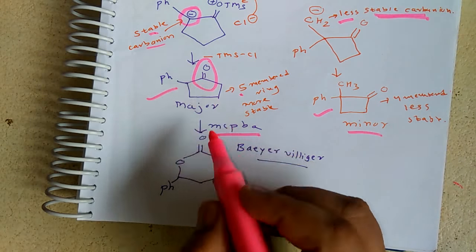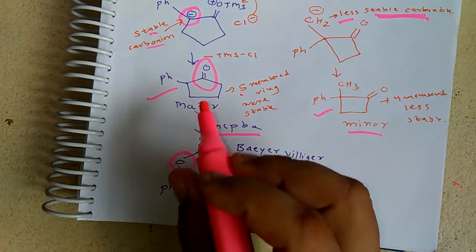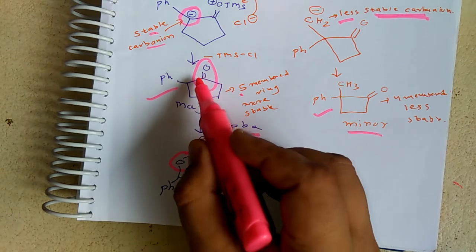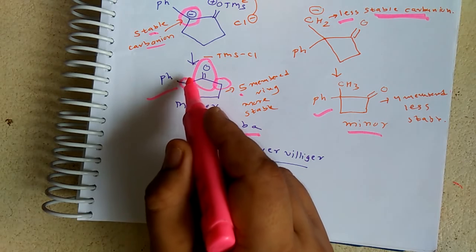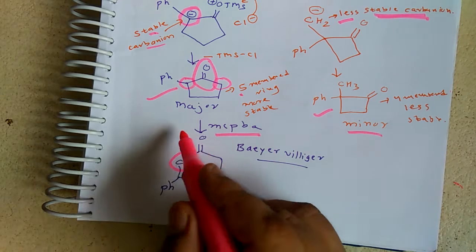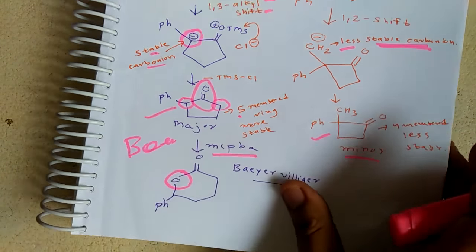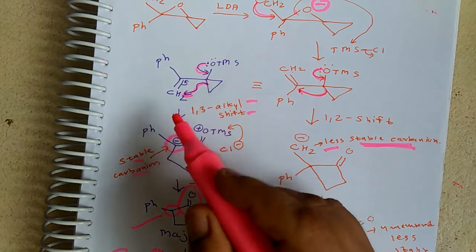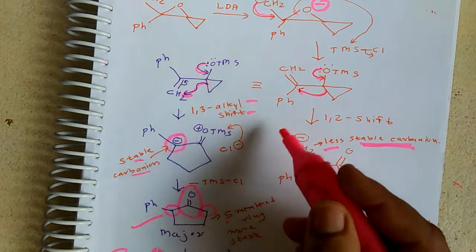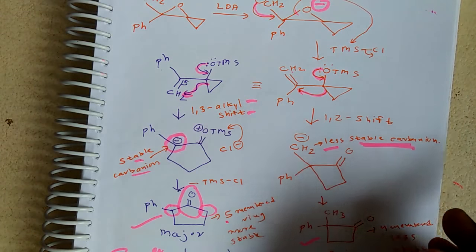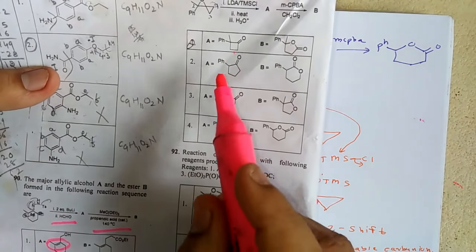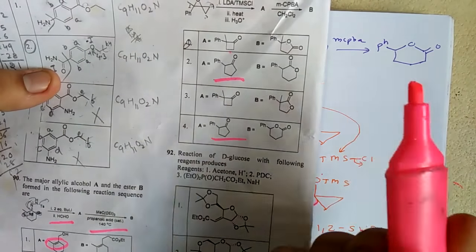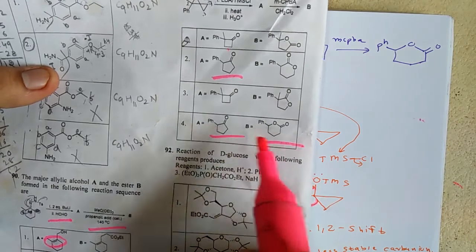Finally, mCPBA is added for the Baeyer-Villiger step. In Baeyer-Villiger reactions, oxygen inserts at the position of highest migratory aptitude. This position has better migratory aptitude, so oxygen inserts there. From the first option — knowing it's a five-membered ring — we confirm the BV product. This is a simple BV step but the tricky part is the alkyl shift in the first step. The final correct answer for this question is confirmed by these two steps together.